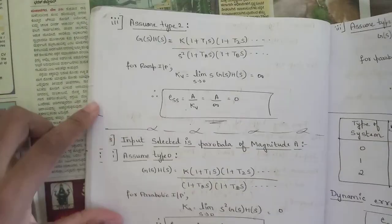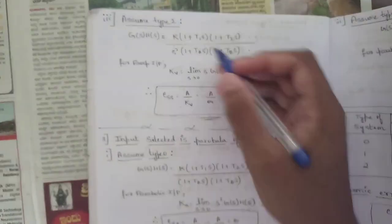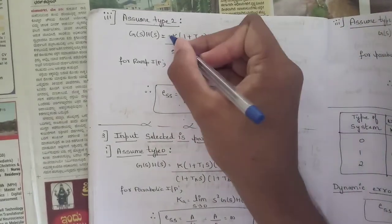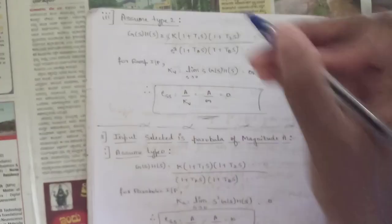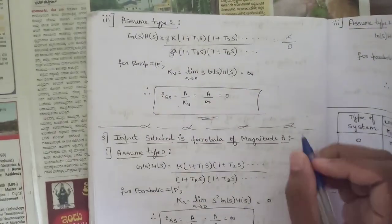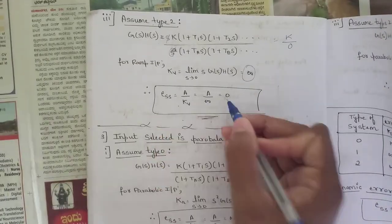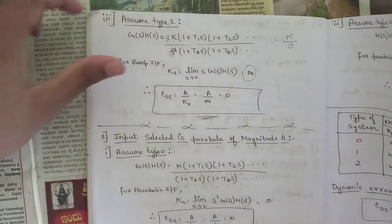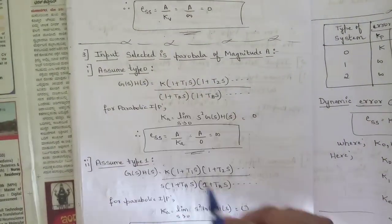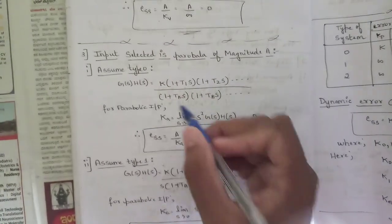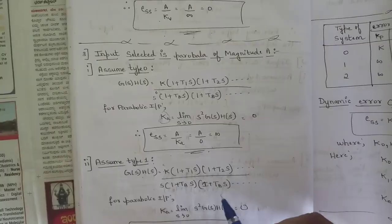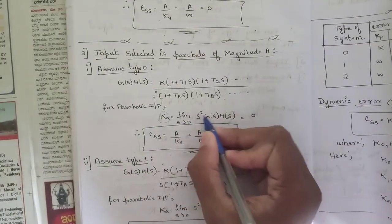For a Type 2 system with ramp input, G(s)H(s) has s² in the denominator. Kv = lim(s→0) s·G(s)H(s) gives K/0 = ∞, so ess = A/∞ = 0. Now for the third case, input is a parabola of magnitude A, and we use the acceleration error coefficient Ka = lim(s→0) s²·G(s)H(s).